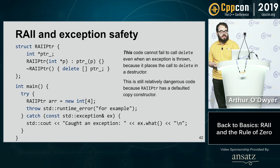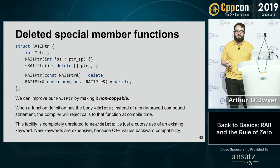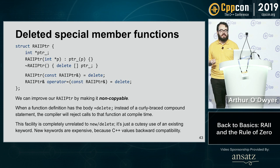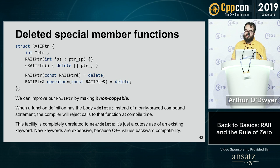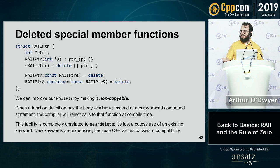To fix the copying problem, we make the type non-copyable by deleting its copy constructor and copy assignment operator using = delete. When a function definition has = delete instead of a body, the compiler will reject any calls to that function at compile time. Note that = delete used to delete a special member function and delete used to free heap memory have nothing in common — they just happen to be spelled the same.